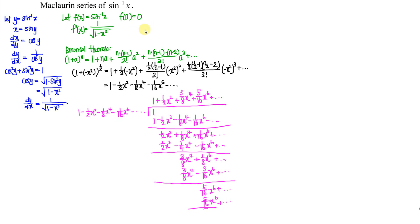So the Maclaurin series expansion of the first derivative is equal to 1 plus 1 over 2 x squared plus 3 over 8 x to the power of 4 plus 5 over 16 x to the power of 6, and so on.